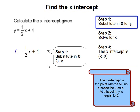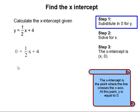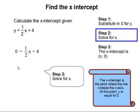So we are going to substitute 0 in for y. Step 2: Now we are going to solve for x. We are going to get x by itself. Subtract 4 on both sides of the equal sign. That gets us negative 4 equals 1 half x.